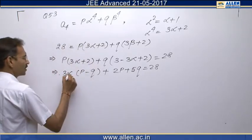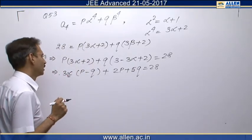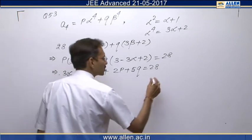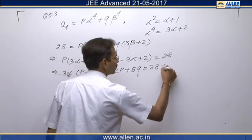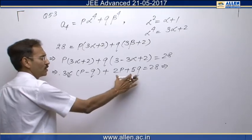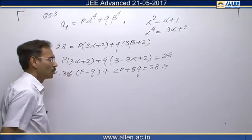As we know that alpha is an irrational number because the quadratic has a discriminant which is not a perfect square. Therefore, this implies P minus Q must be 0 as well as this quantity equals to 28.